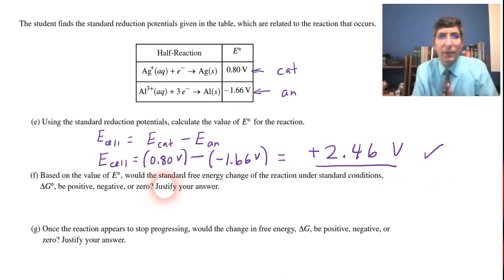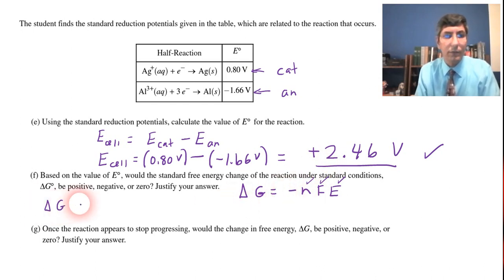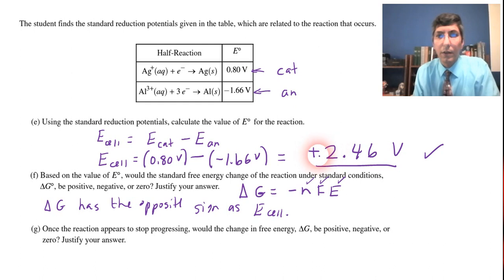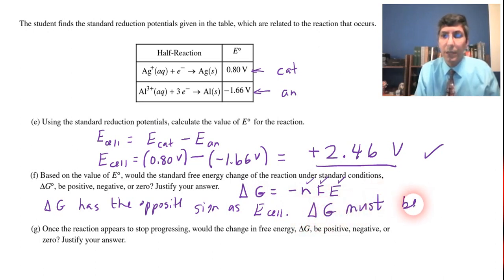Now F, it says, based on the value of E zero, would the standard free energy change of this reaction, delta G be positive, negative, or zero? And the way you answer this is by looking at the equation delta G equals negative NFE. And number of electrons transferred here is always a positive number. Faraday's constant is always a positive number. And E in this equation is a positive number. But notice this, the way that this is written, delta G always has the opposite sign as your E cell. So in this case, since the voltage or the E cell is positive, that means delta G has to be negative. So delta G must be negative because E cell is positive. So you want to have some explanation like that. One point for that explanation.